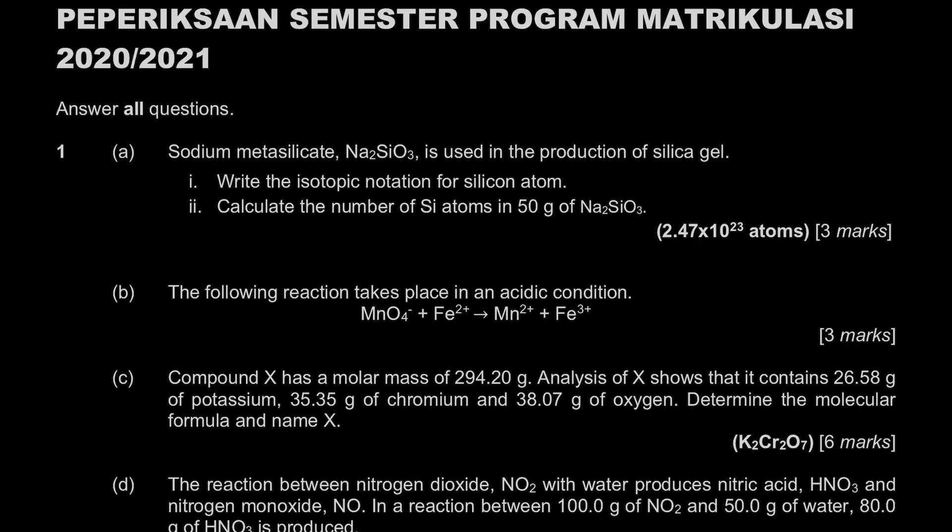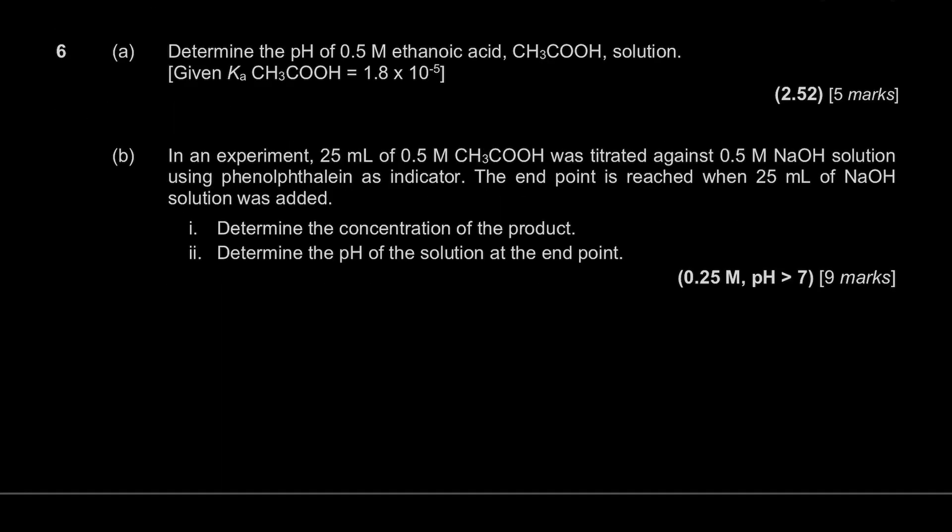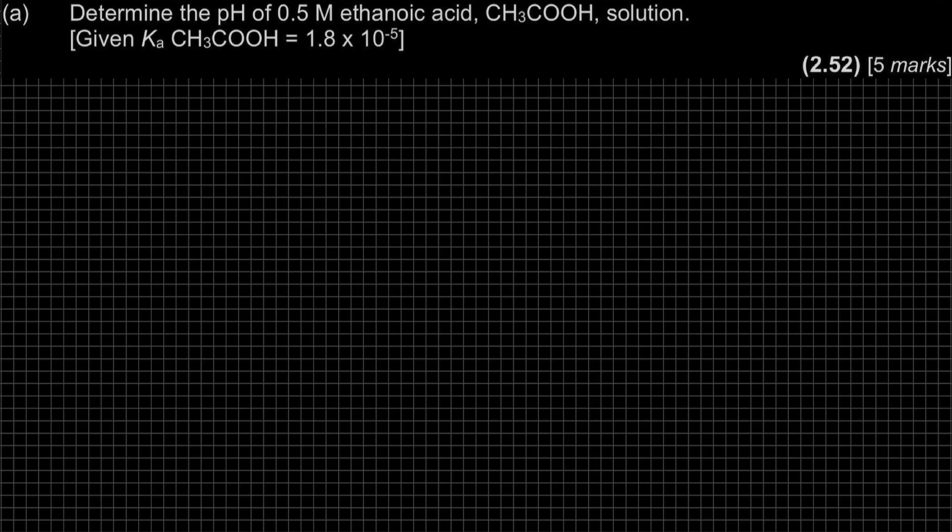Assalamualaikum and hello everyone. Welcome to the video where we will discuss past year question for the year of 2020-2021. In this video, we will discuss question 6 from Chapter 7, Ionic Equilibria. Question A: determine the pH of 0.5 molar ethanoic acid CH3COOH solution, given that the Ka is 1.8 exponent negative 5.